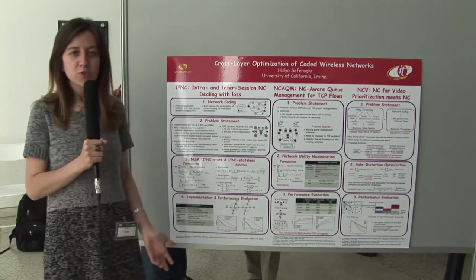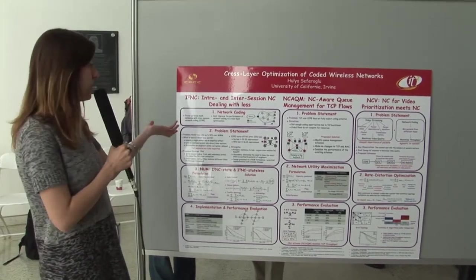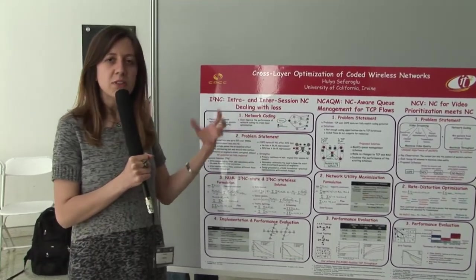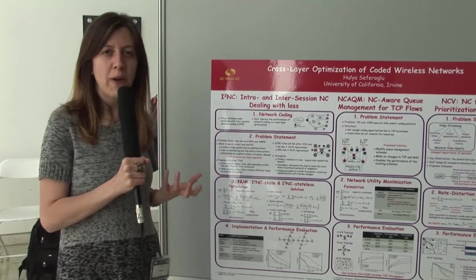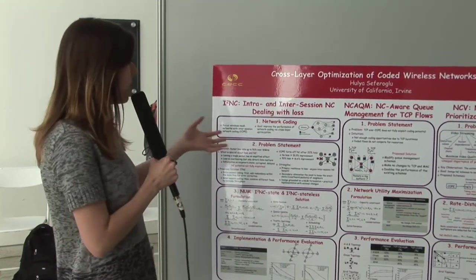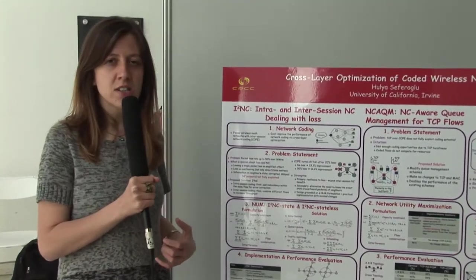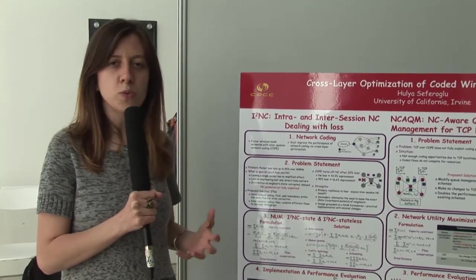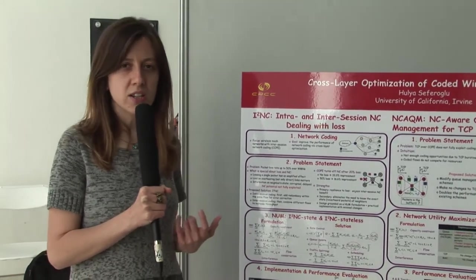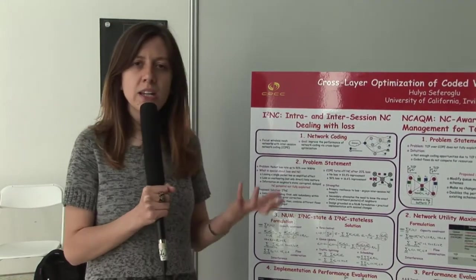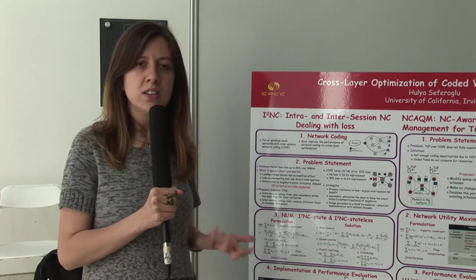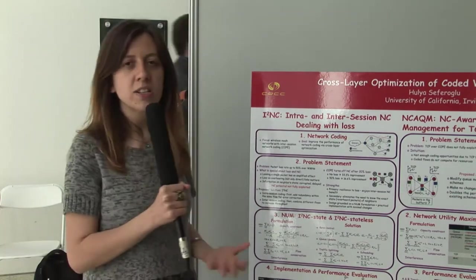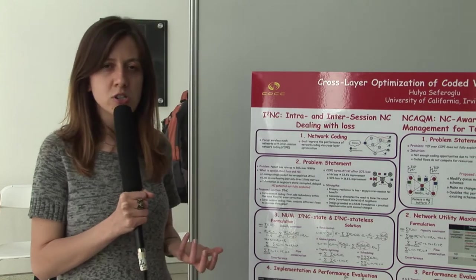According to the network coding paradigm, intermediate nodes can combine several packets into one or more outgoing packets. This idea turns out to have several benefits: it improves throughput and additionally it makes distributed scheduling easier. There are some applications and implementations of network coding over wireless mesh networks and peer-to-peer networks.